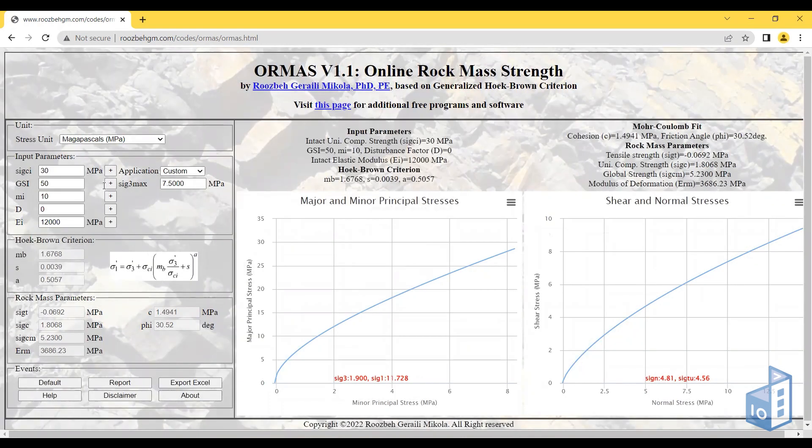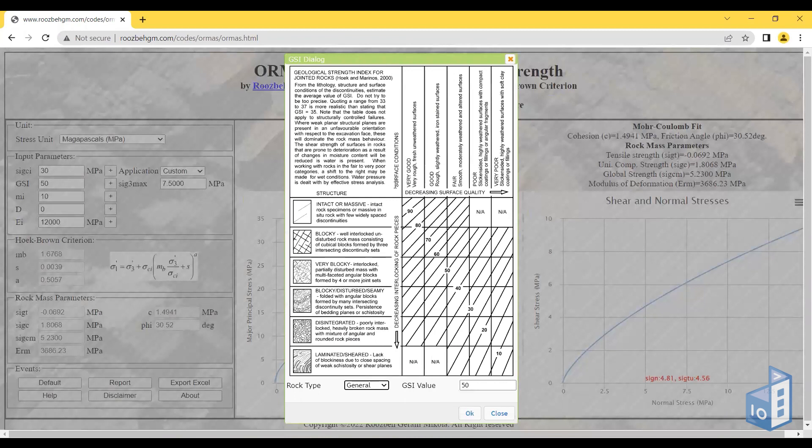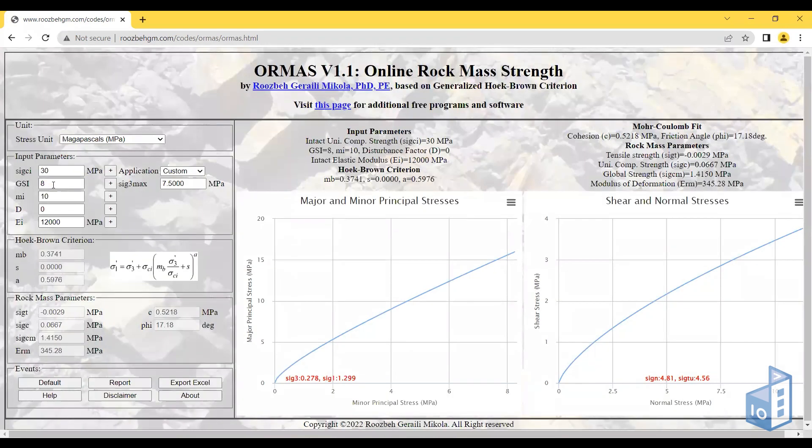You can click somewhere on the chart and get the value. As I click in different places, this GSI value is updated. I can click OK and get a low GSI value. As soon as you use these values, if I change sigma ci from 30 megapascals to something higher...